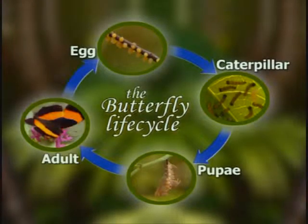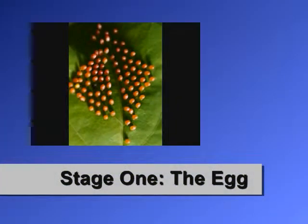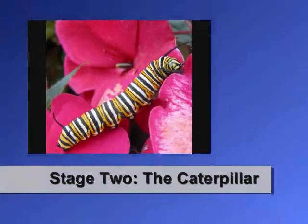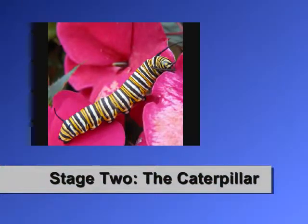Butterflies undergo complete metamorphosis, in which they go through four different life stages. A butterfly starts its life as an egg, often laid on a leaf. The larva, or caterpillar, hatches from an egg and eats leaves or flowers almost constantly. The caterpillar molts, losing its old skin many times as it grows, and will increase up to several thousand times in size before pupating.